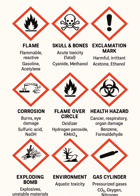Hey Faranad, I've been seeing these red diamond symbols with different icons on our chemical containers. Some show a flame, others a skull, or even a tree. What are these symbols all about? Good question, Gabrielle. Those are part of the Globally Harmonized System, or GHS for short. It's an international system used to classify and label chemicals. The goal is to make hazard communication the same across the world, so whether you're in Egypt, the US, or Asia, you can understand the risks just by looking at the label.